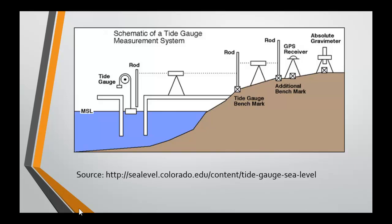A tidal gauge consists of a float with a rod attached. Markings on the rod are compared to another rod on the land, which is known as the benchmark. When the tide ebbs, the floating rod will fall relative to the benchmark. When the tide flows, it will rise relative to the benchmark. The difference between the two is the tidal range.